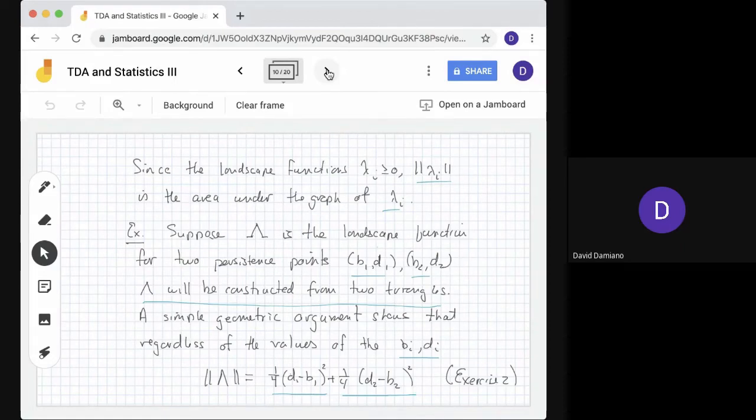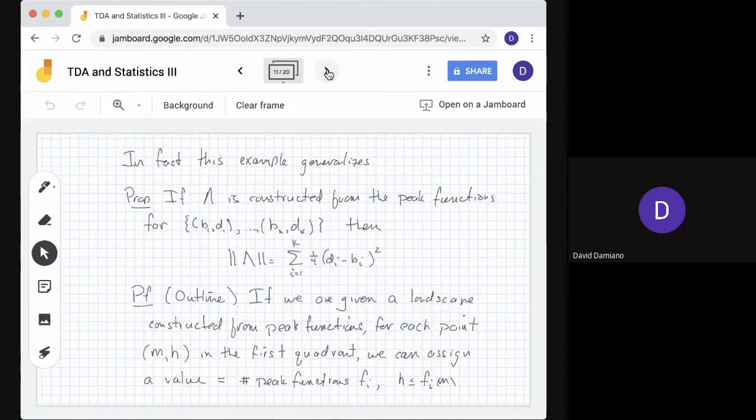In fact, this example generalizes. If λ is constructed from peak functions for points (b1,d1) up to (bk,dk), then ||λ|| = Σ(1/4)(di-bi)². So the norm can be calculated from the peak functions - we don't have to use the landscape functions. Here's an outline of the proof: for each point (m,h) in the first quadrant, we can assign a value - the number of peak functions fi where h ≤ fi(m).